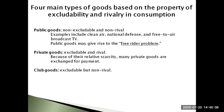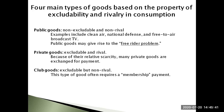Goods that are both non-rival and excludable are called club goods or natural monopolies. For example, fire stations can exclude people by deciding to let their house burn down; however, fire protection is not rival in consumption — once a fire department is built and paid for through taxes, it doesn't cost much more to protect one more house. This type of good often requires a membership payment to enjoy its benefits, and non-payers can be prevented from access. Cable television is a classic example — it requires a monthly fee but is non-rival in consumption.